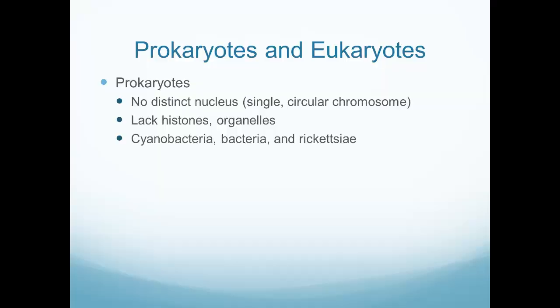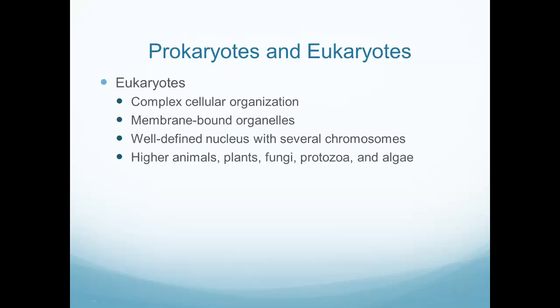We can divide cells into two main categories: prokaryotes and eukaryotes. Prokaryotes involve no distinct nucleus — there's a lack of histones, organelles, etc. These are the kinds of cells we're talking about when we talk about bacteria. Eukaryotes, on the other hand, are our higher animals and plants, and have membrane-bound organelles like we see in human cells, a well-defined nucleus, and several chromosomes.